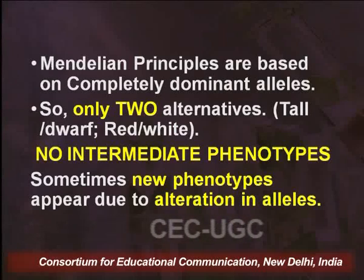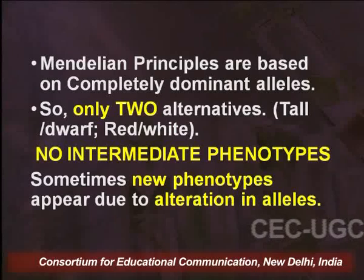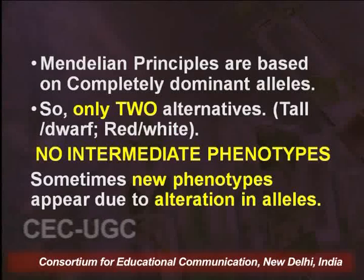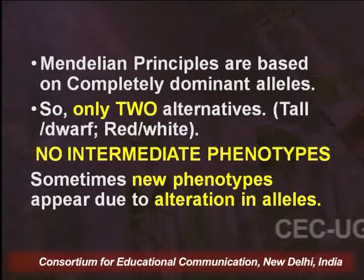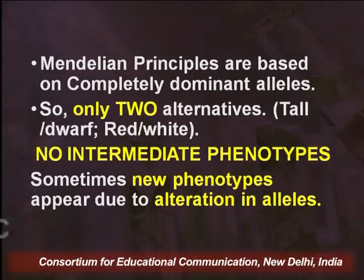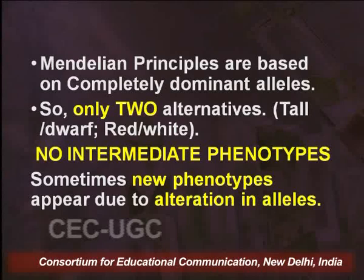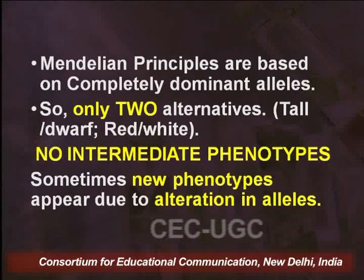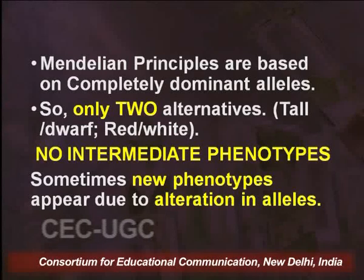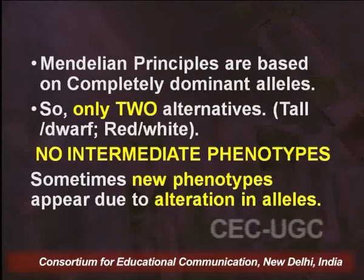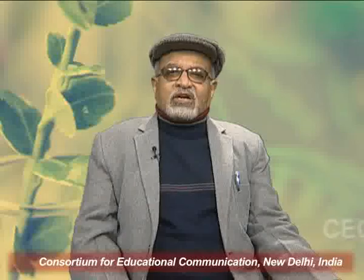In the case of a completely dominant allele, there have to be only two alternatives — either tall or dwarf. So that means only two phenotypes. Likewise, only red or white — again two alternatives. There is no question of an intermediate phenotype and therefore no confusion. But sometimes this does occur. Science is full of exceptions; of course the rules are more. So sometimes new phenotypes will also occur.